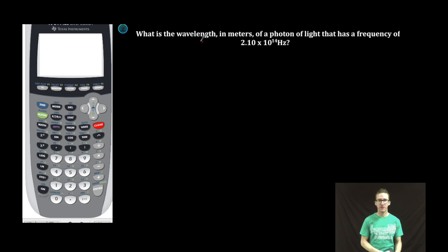As you take a look at this first problem, we're asked to solve for the wavelength in meters of a photon of light that has a frequency of 2.10 times 10 to the 14 hertz.